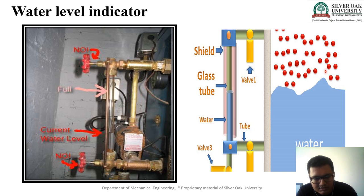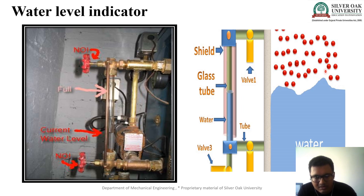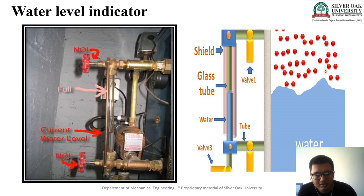When both valves are open, water gets inside the glass tube from below and steam enters from the top. After a certain time it reaches equilibrium and shows the water level inside the glass tube. It is compulsory to know how much water is present inside the boiler, because if water is not available and we supply heat energy, the boiler gets overheated and an explosion may occur.